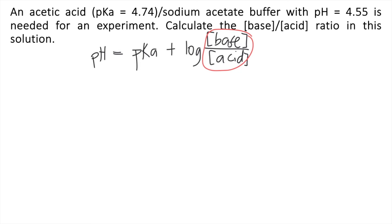What you do is transfer pKa to the left side. That becomes pH minus pKa, and that equals log of the concentration of base divided by the concentration of the acid.